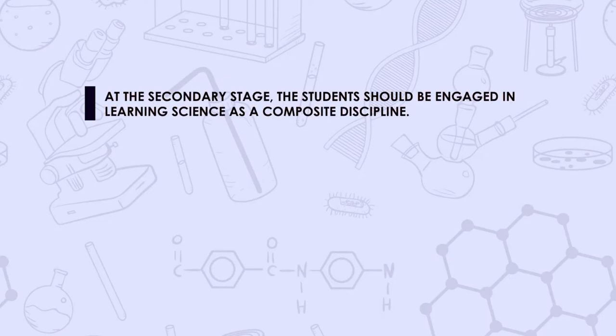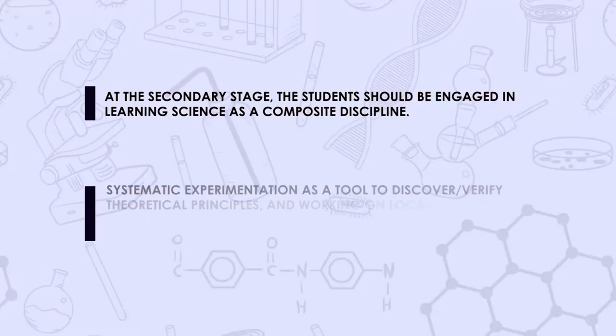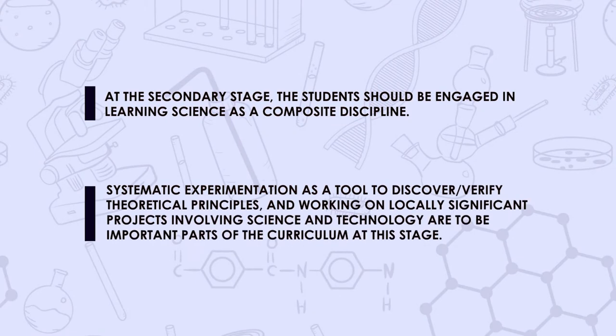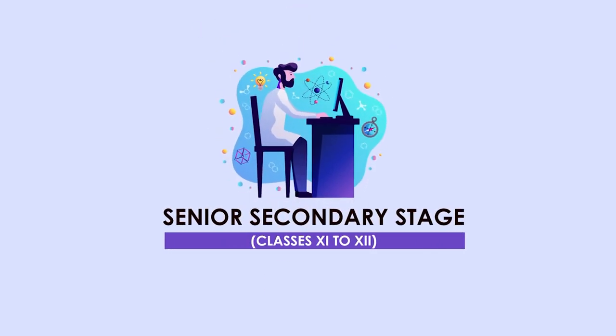It may be summed up that at the secondary stage, students should be engaged in learning science as a composite discipline involving physics, chemistry, and biology, in working with hands and tools to design more advanced technological modules, and in activities and analysis on issues surrounding environment and health. Systematic experimentation as a tool to discover and verify theoretical principles, and working on locally significant projects involving science and technology, are to be important parts of the curriculum at this stage.